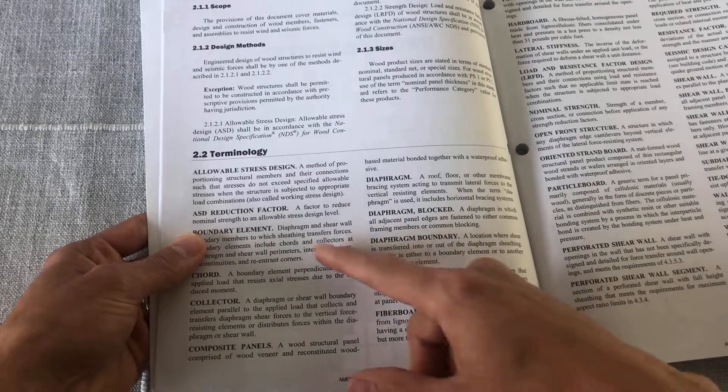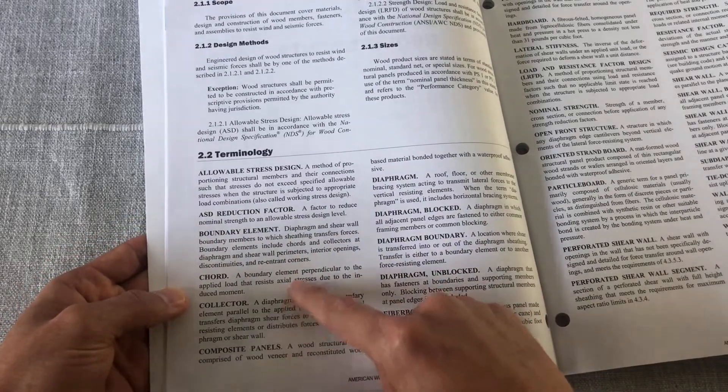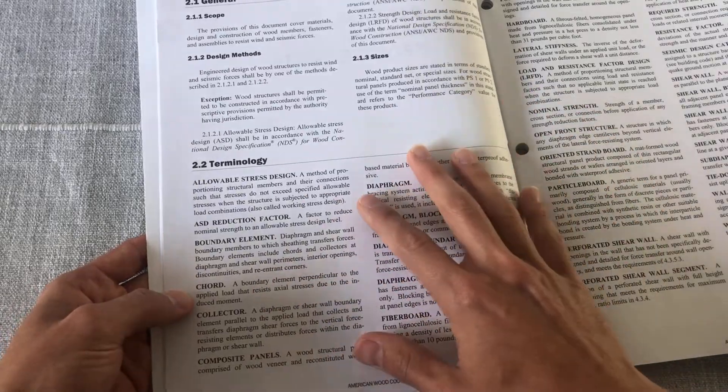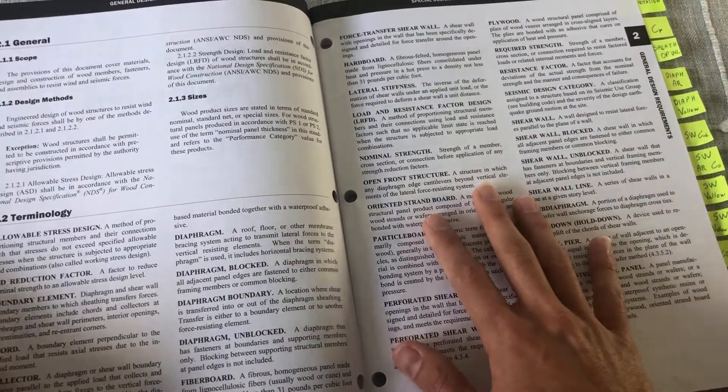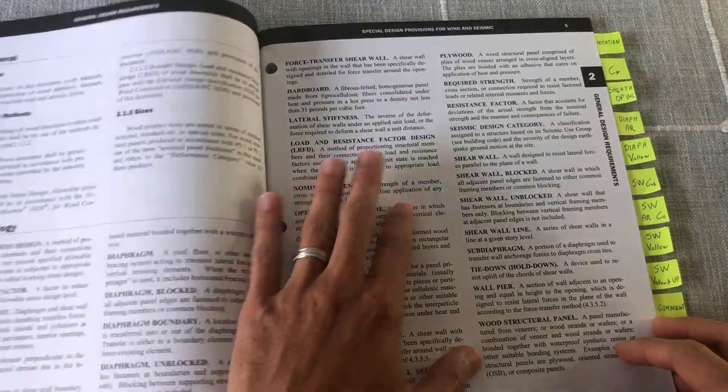And then also for terminology, you may not know what composite panels are or what the boundary element is according to this provision. So it's a good tab to have and to refer to every so often.